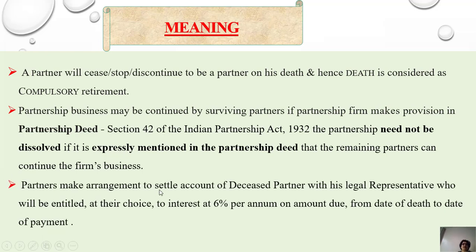Partners make arrangements to settle the account of the deceased partner with his legal representative. The nominee or legal heir of the deceased partner may be appointed as legal representative and will be entitled, at their choice, to interest at 6% per annum on the amount due, from the date of death to the date of payment.